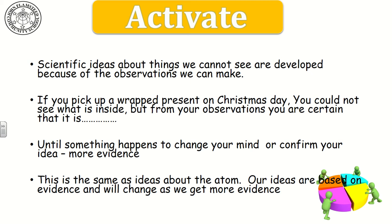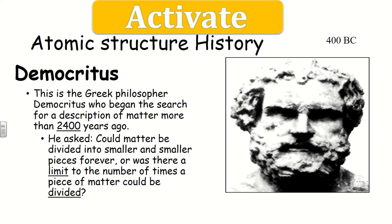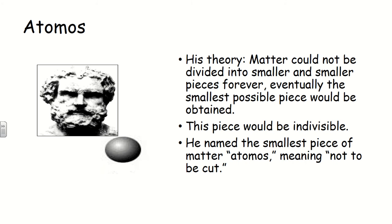That's basically how scientific theory works: you make observations, apply your knowledge, and keep your theory until something comes along to change your mind — maybe more evidence. These theories about what an atom looks like have been ongoing for a very long time. The first main character is Democritus, a Greek philosopher who lived two and a half thousand years ago. He asked whether you could divide matter into ever smaller pieces or whether there was a limit.